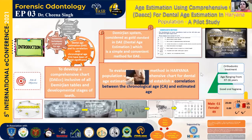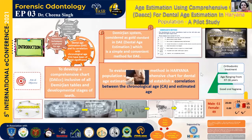Everyone knows about the Dienergen system, which is considered the gold standard for age estimation. It is very simple, convenient, and easy to understand. The aim of the study was to develop a comprehensive chart — the DAEC — inclusive of all the median tables and developmental stages of the teeth. The objective was to evaluate the method in the Haryana population and establish a correlation between chronological age and estimated age.